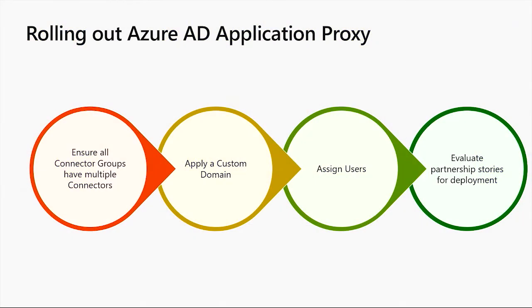Finally, let's learn how to roll out Azure AD Application Proxy and move it into production. There are four things that you'll want to consider as you go through this process. The first is to make sure that you have multiple connectors, and if you've created multiple groupings of connectors, make sure that each group has multiple connectors as well. This will ensure that you have high availability and more resiliency in general.